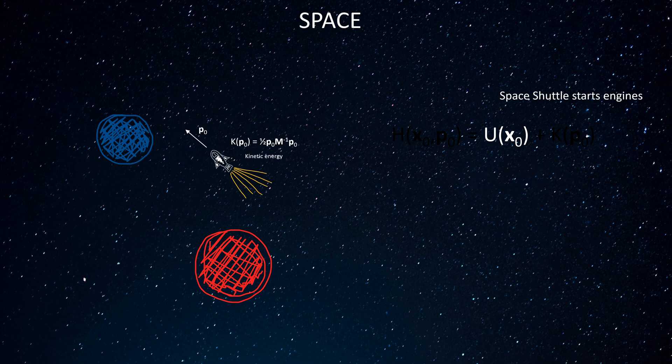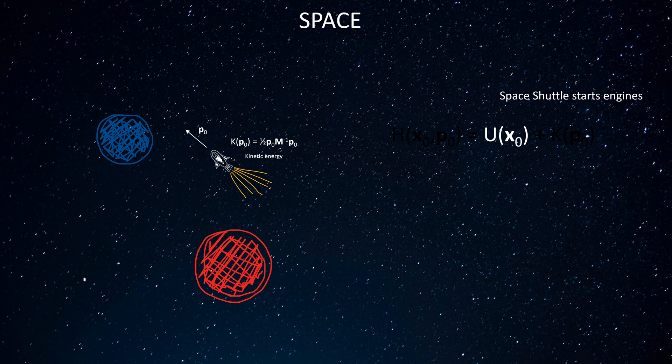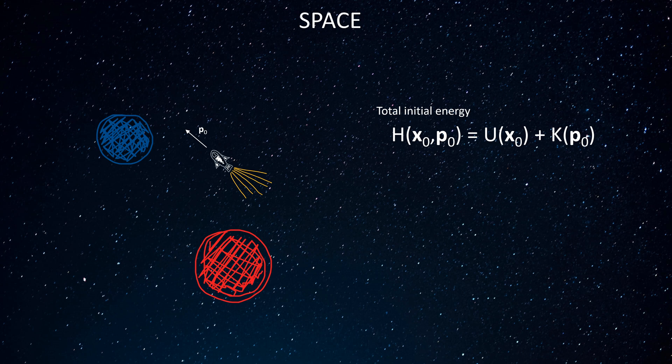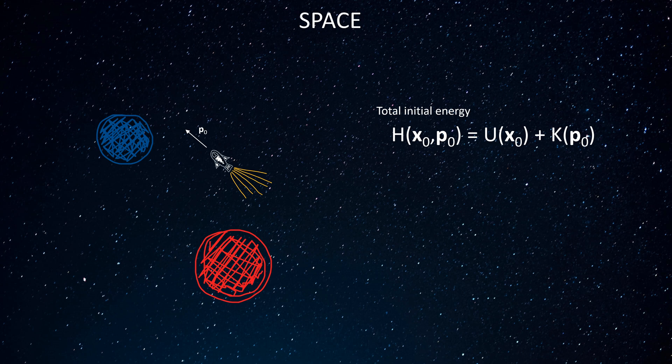Then the shuttle briefly starts its engines, giving it an initial momentum p0 and an initial kinetic energy k. We add this kinetic energy to the potential energy, giving us the total energy h. Now with this momentum the shuttle starts flying along some trajectory.